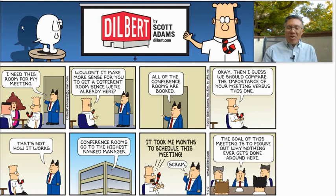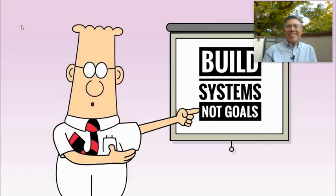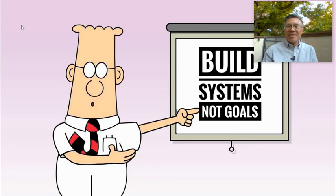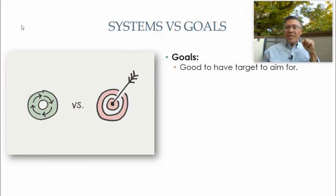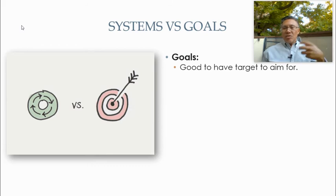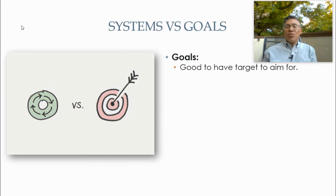This guy, $75 million net worth. How did he do it? How did somebody that failed so often, that claims to be mediocre at being funny, mediocre at writing, mediocre at drawing — how did he do it? His philosophy was to build systems as opposed to focusing on goals. Goals give you a target to aim for, which is good. It's good to have a sense for where you want to go — goals act as magnets that pull us someplace. They give us direction and energy to move.